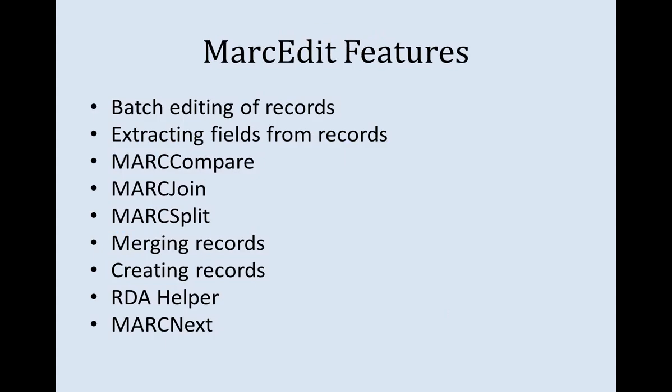Here are the features I'm going to briefly demonstrate using MarcEdit. You can batch edit records — if you have a bunch of records that need the same field added or deleted, you don't have to touch them all individually. You can extract fields from records to create a spreadsheet. There's a MARC Compare function to compare two different MARC records, MARC Join to combine smaller batches into a larger batch, MARC Split to split a large batch into smaller groups or individual records, and you can merge records with similar data to create a new record.